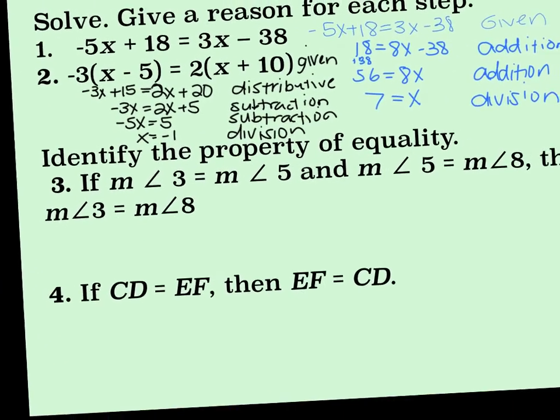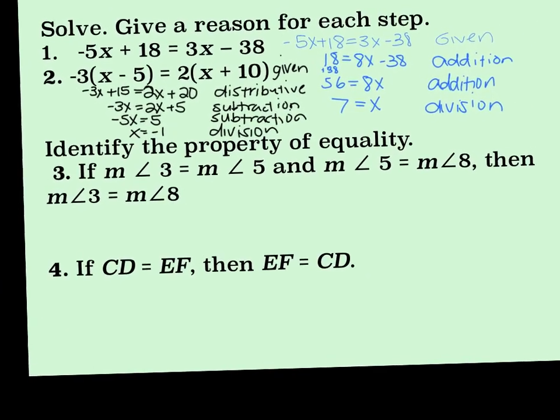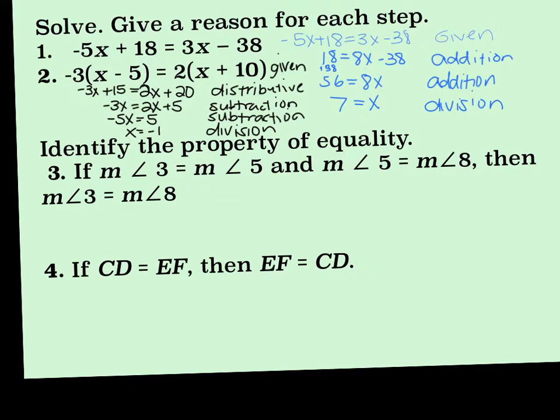Number 3 says if 3 equals 5 and 5 equals 8, then 3 equals 8. That property would be what? Transitive, good. And 4, if CD equals EF, then EF equals CD? Symmetric, good.